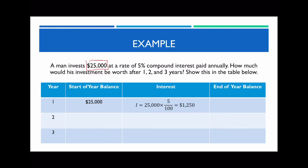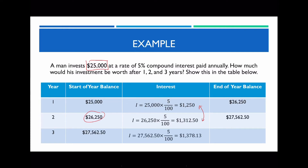The balance at the end of year one is $25,000 + $1,250 = $26,250. This becomes the starting balance for year two. With compound interest, the new principal is $26,250, so the interest in year two is $26,250 × 5% = $1,312.50. Notice the interest increases each year. Adding these gives a balance of $27,562.50. Likewise, this becomes the new principal for year three, and the same process continues. This is how we set out the table.